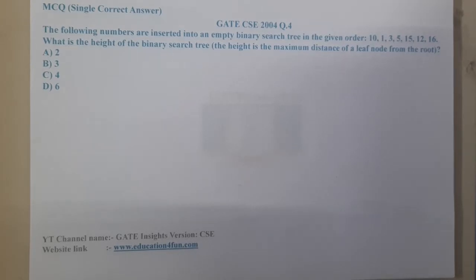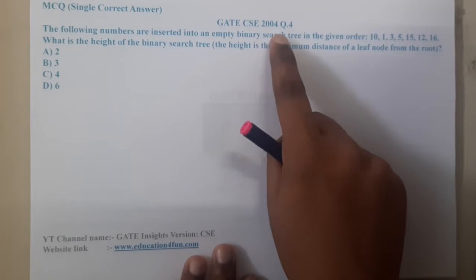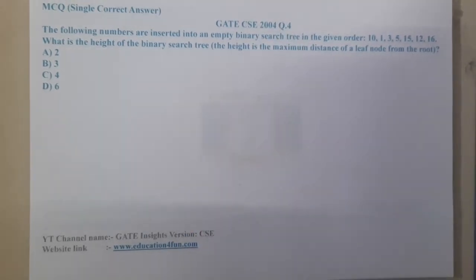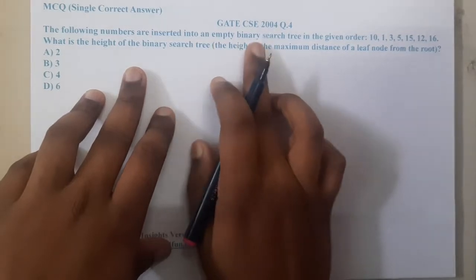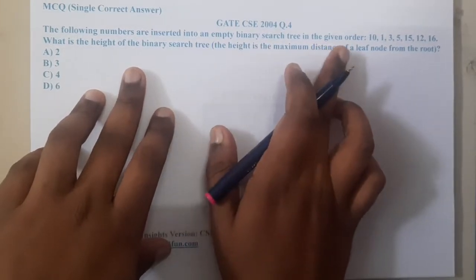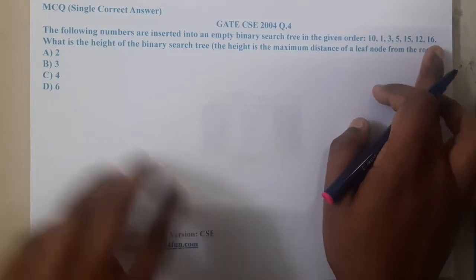Hello guys, we are back with our next lecture. In this lecture, let us continue with the next question. This is a GATE CSE 2004 Question 4. The following numbers are inserted into an empty binary search tree in the given order: 10, 1, 3, 5, 15, 12, 16.